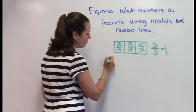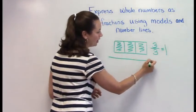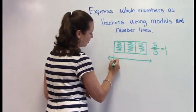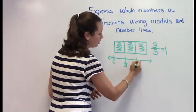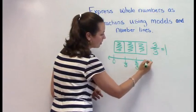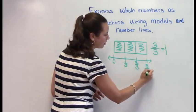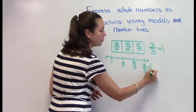This can also be shown using the number line. If we take our number line, we have our zero, we have one third, two thirds, and three thirds, which is equal to one whole.